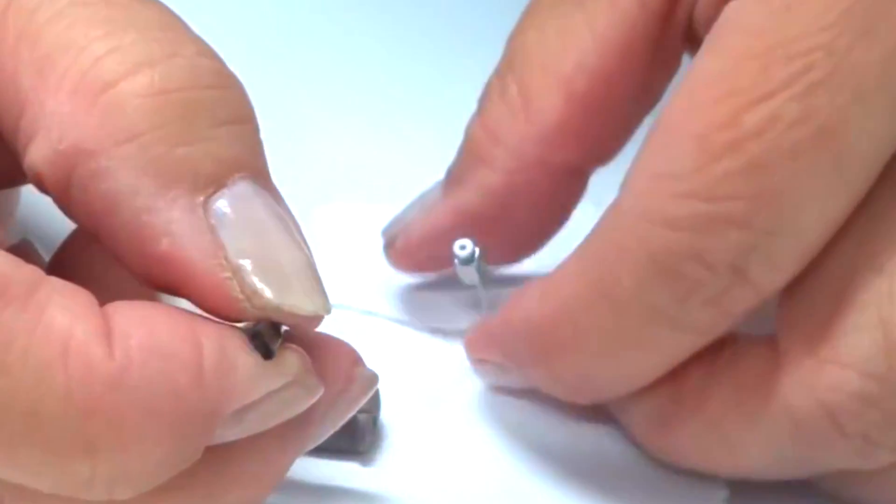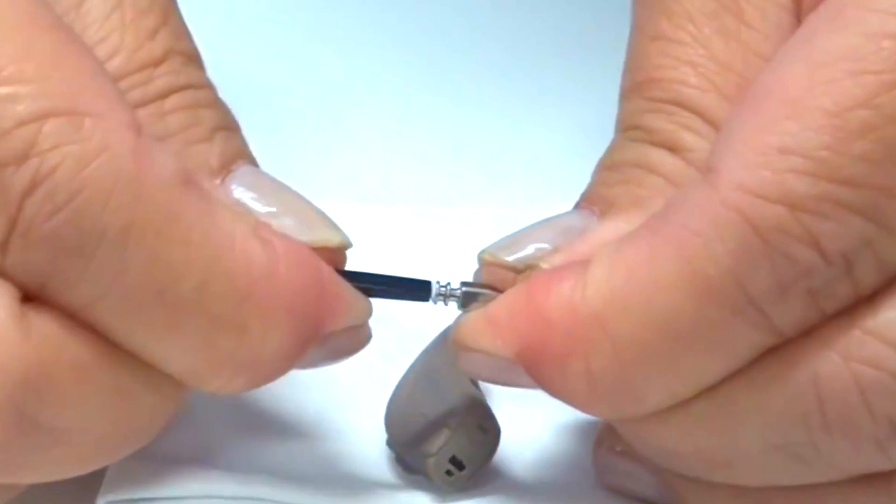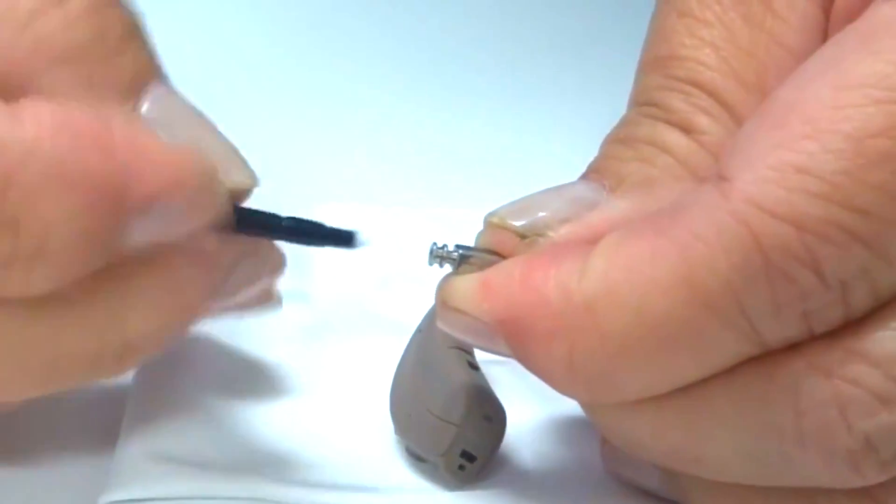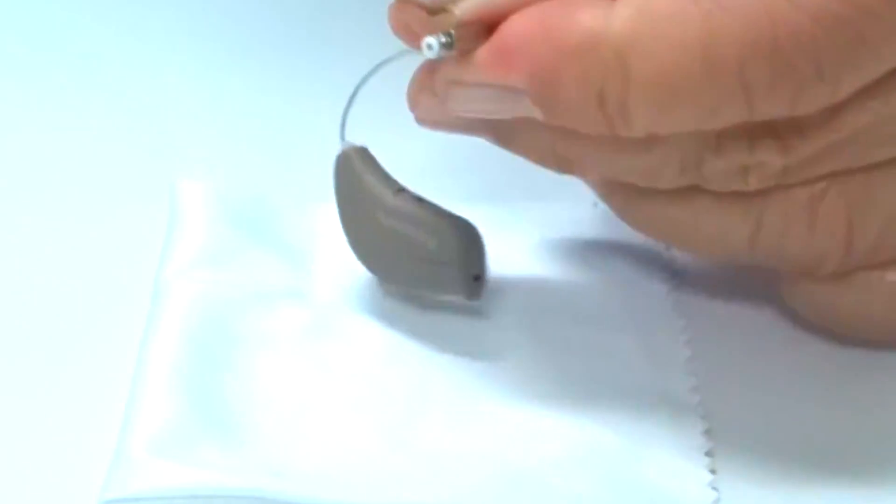The end of the replacement tool is firmly inserted into the wax guard to remove it. The replacement tool is then flipped, which already has a new wax guard preloaded. Firmly insert the new wax guard into the hearing aid receiver.